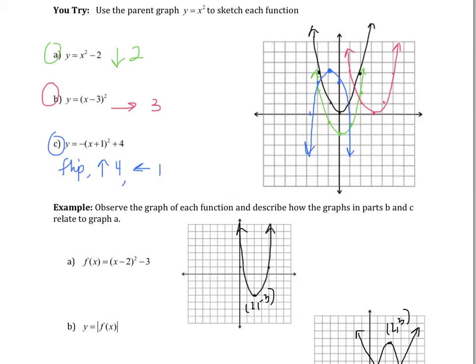Okay, and there's the solution. So A is in green, B is in red, and C is in blue. So those are the translations you should have gotten.